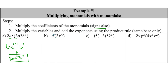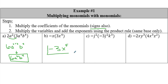Signs matter too. If I have a negative multiplied by only a positive, the end result will be negative. So a coefficient of negative 1 times 3 gives me negative 3. Then x to the 1 times x to the 4 - I add those exponents - and I get negative 3x to the fifth. Simple!